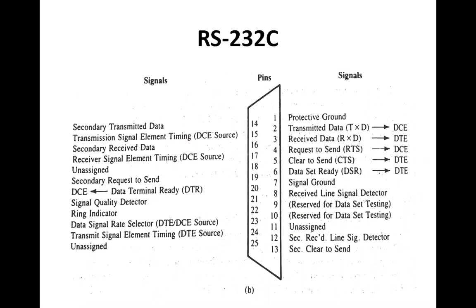Pin number four is Request to Send (RTS), activated by the transmitter when it wishes to send data over the line; it may stay active until the end of communication. Pin number five is Clear to Send (CTS), used by the receiver to inform the transmitter whether it is ready to accept the transmission. If this pin goes inactive during transmission, the transmitter stops and generates an error signal.